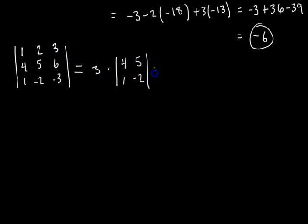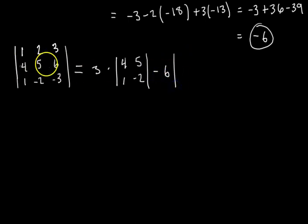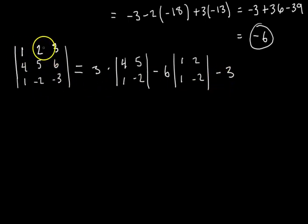Going down the third column, next we have 6 in the second row. Is it plus or minus? The pattern goes +, −, +, −, so it's minus. You can also check: 2+3=5, and (−1)^5 is negative. So this term is negative 6 times the determinant of the minor — crossing out the second row and third column gives the 2x2 matrix with entries 1, 2, 1, −2. Then the last entry in the third column is −3 in the third row. The pattern says plus, so positive 1 times (−3) times the determinant of 1, 2, 4, 5.